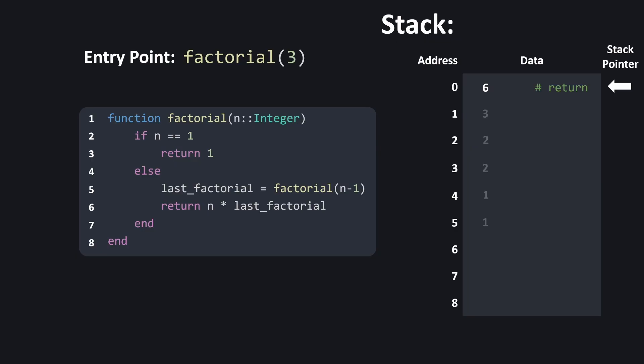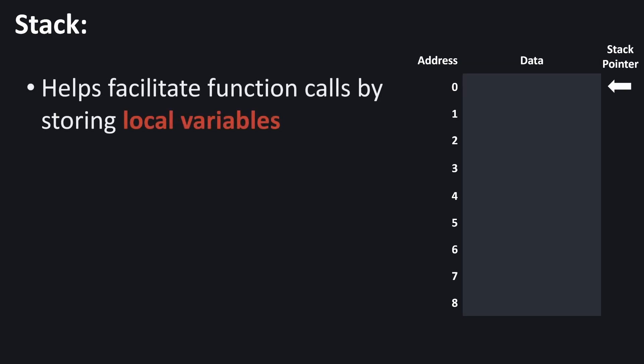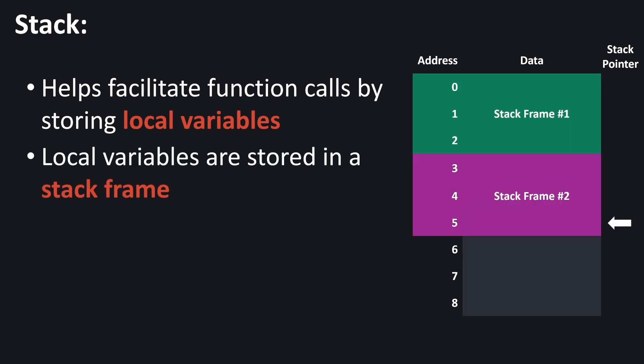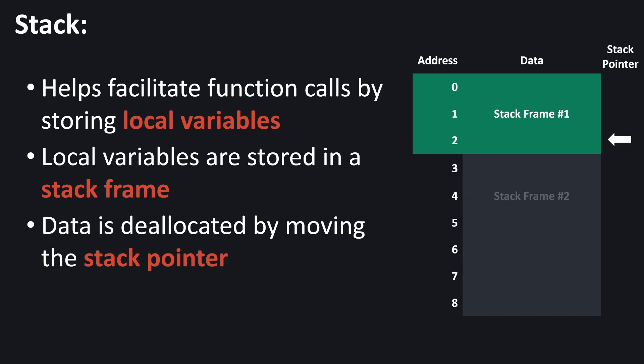Let's summarize what the stack is useful for. The stack forms an integral part of how function calls are evaluated — it's where local variables are stored in memory. The color-coded regions of memory local to a specific function call are called stack frames. Along with local variables, a stack frame usually contains metadata that helps control flow, including a pointer to the next instruction to execute once a function returns. When a function returns, we deallocate the memory by moving the stack pointer up. This data is not explicitly overwritten — all we're doing is updating the stack pointer.